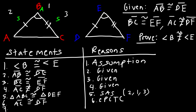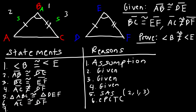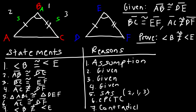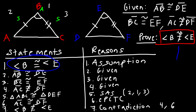For statement seven, notice that statement six and statement four contradict each other: statement four says AC is not congruent to DF, but statement six says AC is congruent to DF. Because those two statements contradict each other, our original assumption was false, and therefore angle B is not congruent to angle E. The reason is a contradiction of statements four and six. That's how you use an indirect proof — the key is to start with the negation of what you're trying to prove.